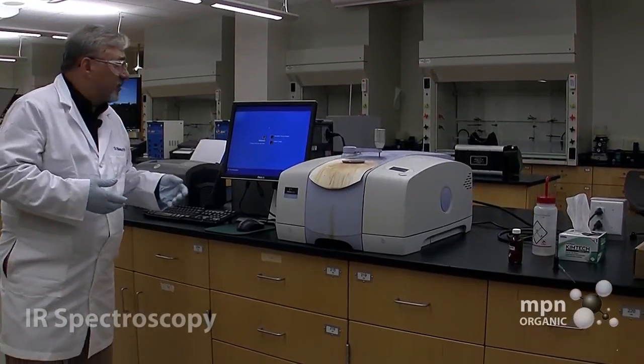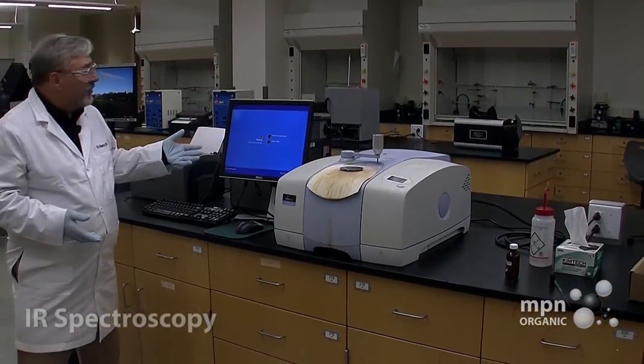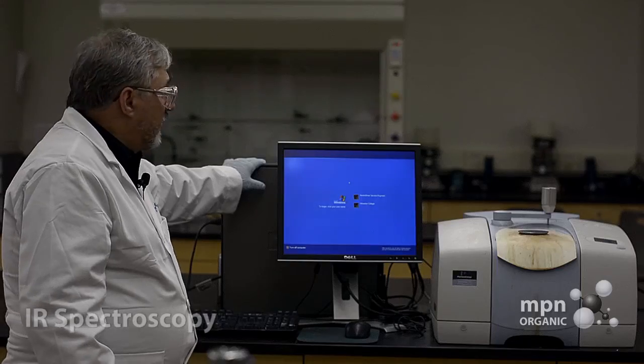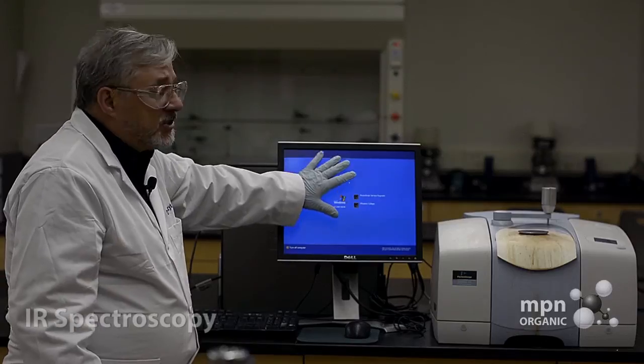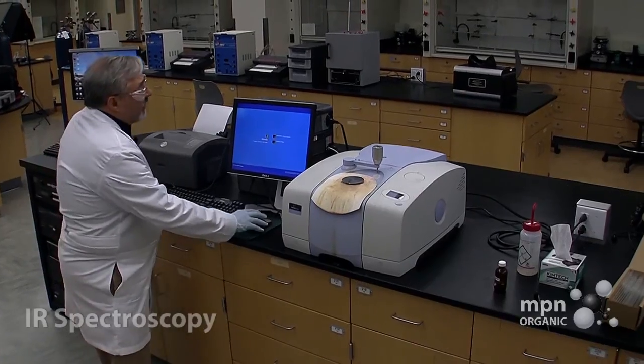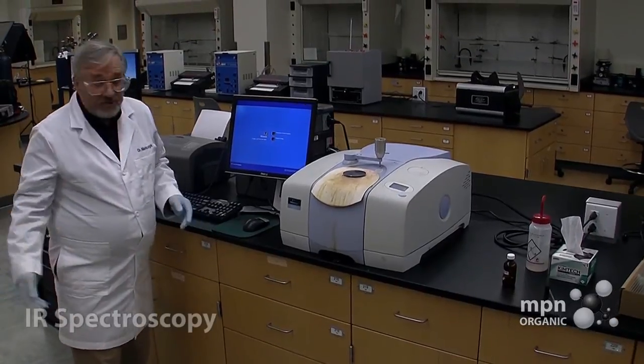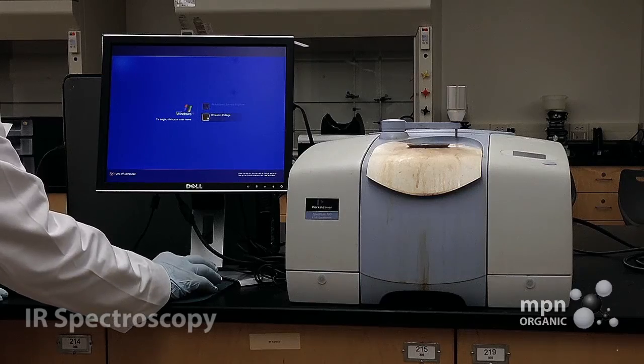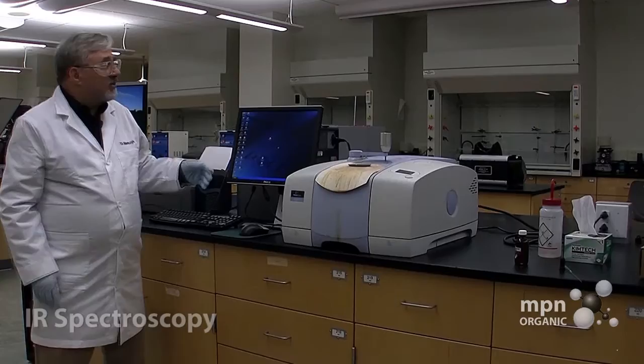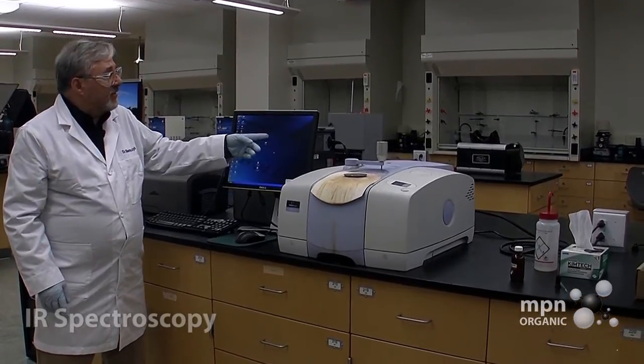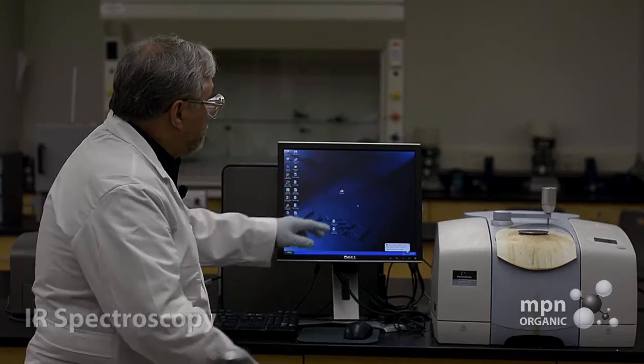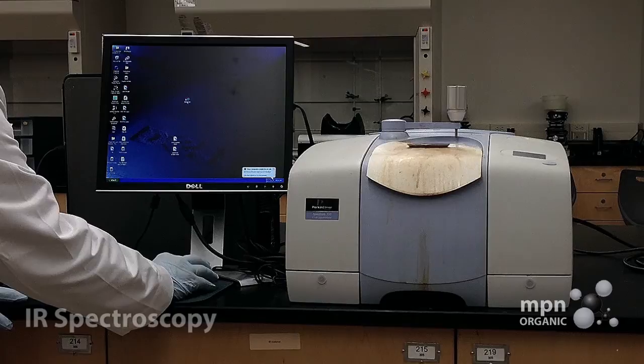So the first thing we have to do is to turn on the instrument. And we do that by means of turning on the computer that's behind this screen here. We're going to come to this screen first, and since this is at Wheaton College, we're going to click on Wheaton College. And we're going to then come to this screen. Now this screen has an icon pretty much in the middle of the screen called Spectrum, and we're going to click on that.